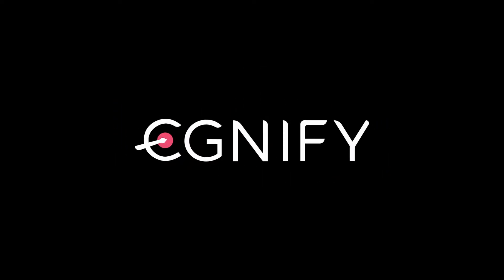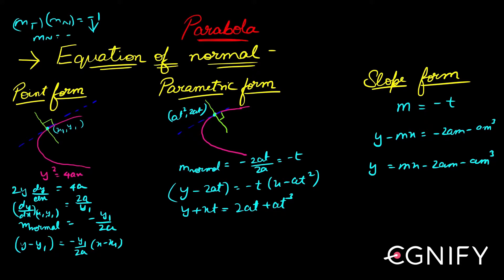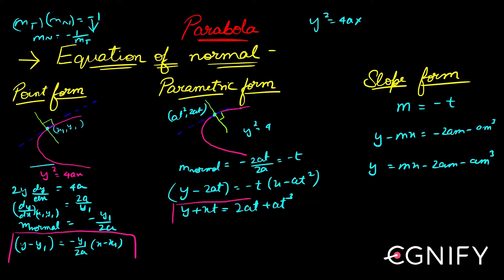Let us now start our discussion with the equation of a normal — once again, very similar to what we discussed in circles. We'll first find the slope of the tangent, then use the relation: slope of tangent × slope of normal = −1, to get the slope of normal. A word of caution: all the formulas you see are valid only for the parabola y² = 4ax. These three results are valid only for this parabola.